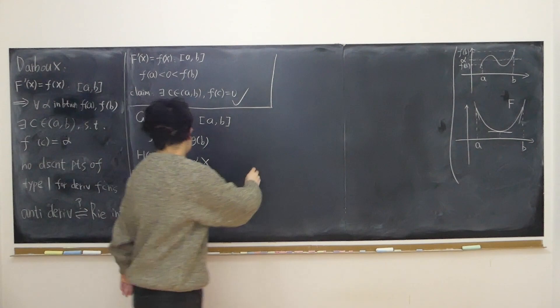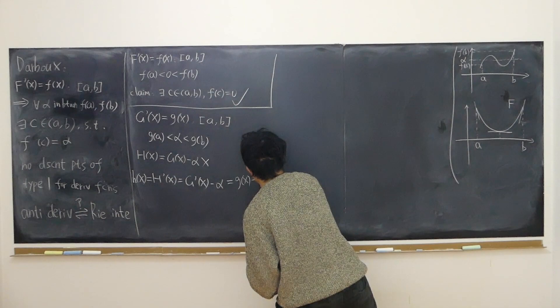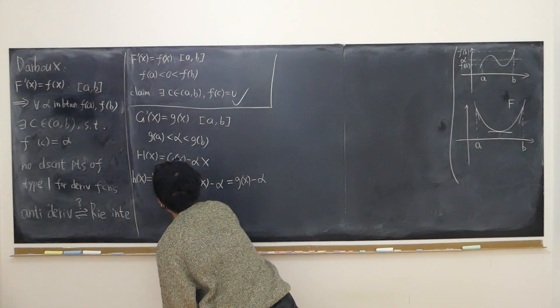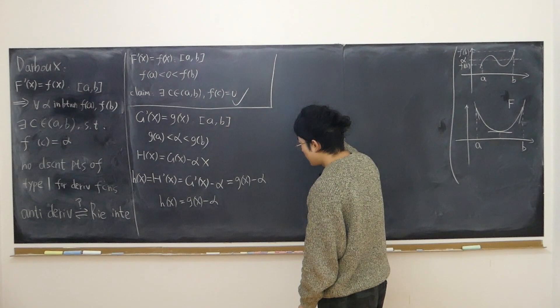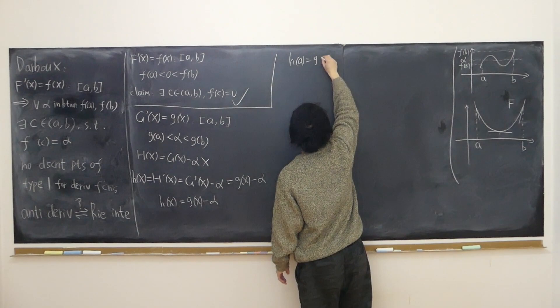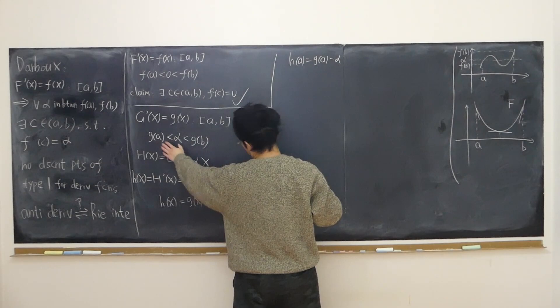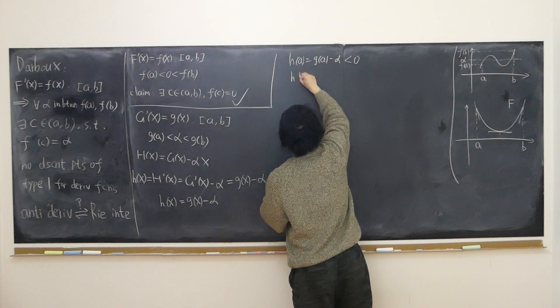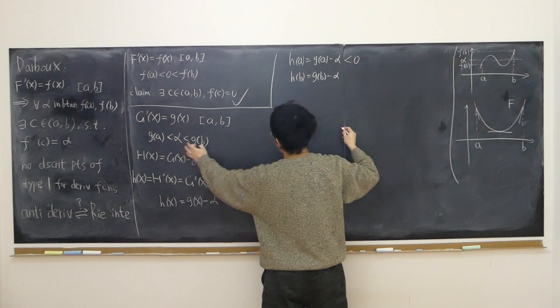So little h(x) = little g(x) − α. What is little h(a)? It's little g(a) − α. Since g(a) < α, then g(a) − α < 0. What is little h(b)? It's little g(b) − α. Since g(b) > α, then g(b) − α > 0.